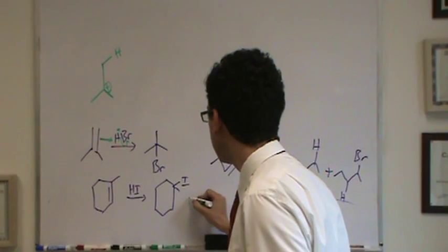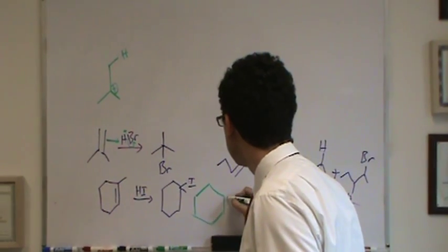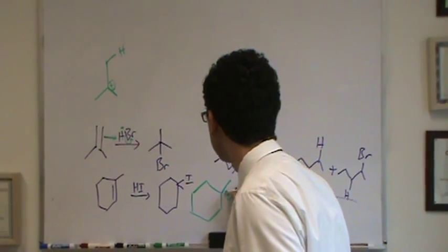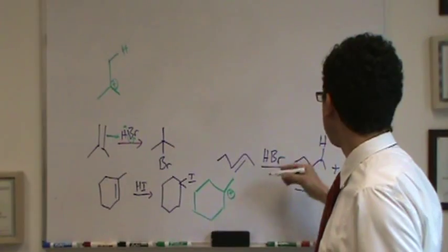So in this case, same sort of thing. Here, the most substituted site will be right there. Here's where the bromine minus will want to go. Here's where the I- will want to go.